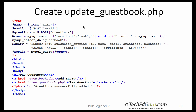When the user clicks on the submit button, update_guestbook.php is going to be run, so we need to create that file. Go ahead and type in the text and save it as update_guestbook.php. In this file we are going to be loading the database, opening the database, and inserting the record using the INSERT INTO SQL command. The user provides the name, email, and greetings, and we will generate the ID and the post date.